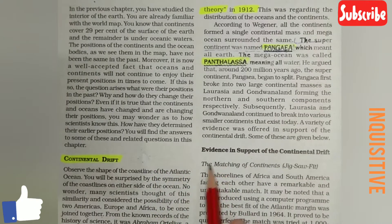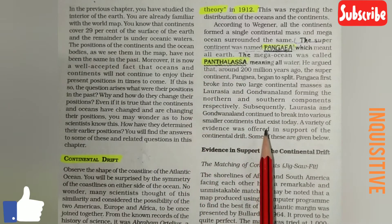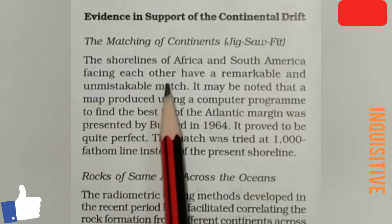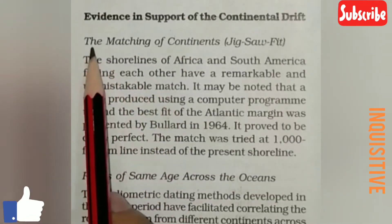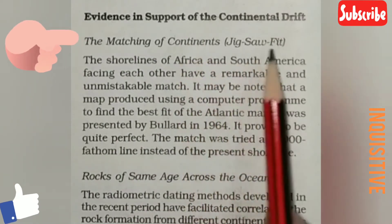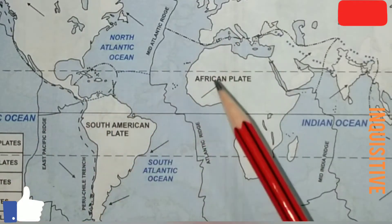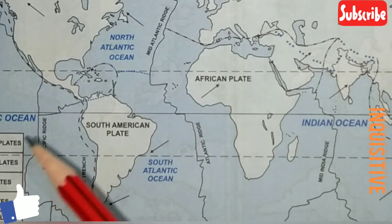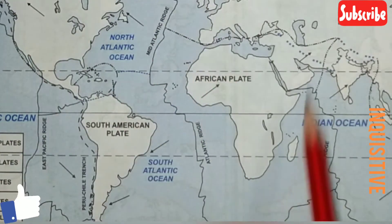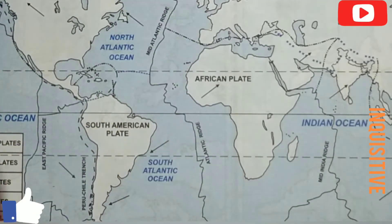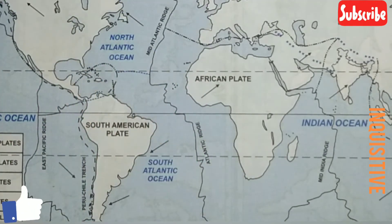The evidence in support of the continental drift theory was given by Alfred Wegener. The first evidence is the matching of continents, sometimes also called the Jigsaw Fit. It is called Jigsaw Fit because when you were little, you played puzzles — a big picture cut into many pieces that you had to rearrange and fix.